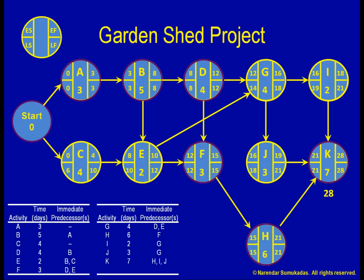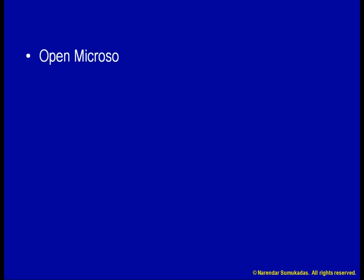All of these computations can be performed using software such as Microsoft Project. The remainder of this presentation shows how to use Microsoft Project to develop the Gantt chart and network diagram, and calculate the activity slack, early start, early finish, late start, and late finish times.